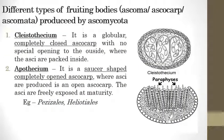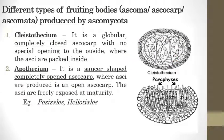Now we will see the different types of fruiting bodies, also called ascomata or ascocarps, produced by the Ascomycota group. The first one is Cleistothecium. It is a globular or completely closed ascocarp — there is no opening. It is a completely closed ascocarp called Cleistothecium.